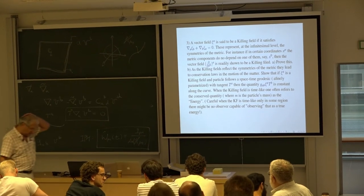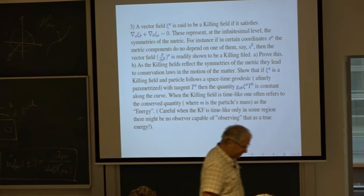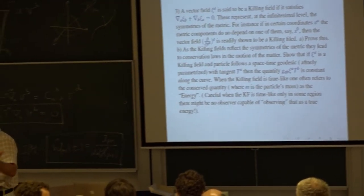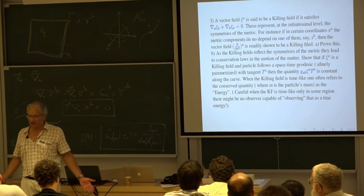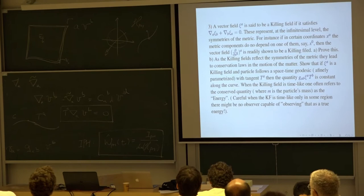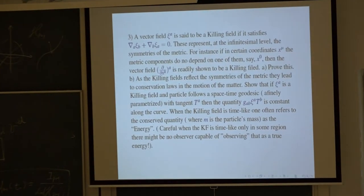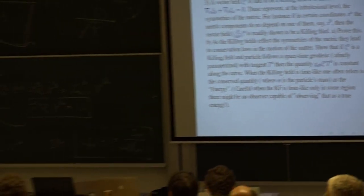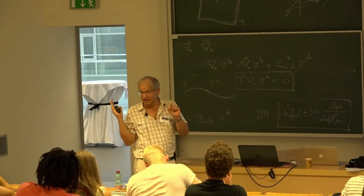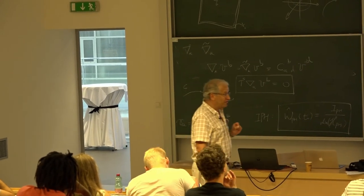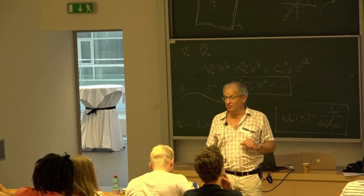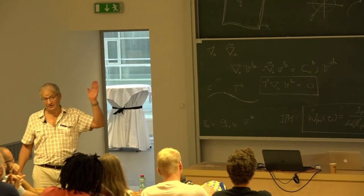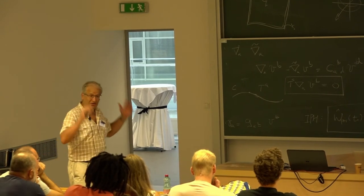Many concepts that we are used to relying on in physical discussions simply disappear in general relativity. One concept, for instance, is the energy of a particle. An observer can assign an energy to the particle, but a different observer passing through the same point with a different four-velocity will assign a different value. When this observer again encounters the particle, even if the particle has been moving freely, he will find a completely different number. So there is no energy conservation, no notion of conserved energy or momentum in general.